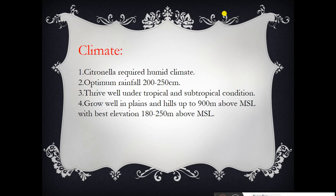Regarding climate, citronella is a tropical and subtropical crop requiring humid climatic conditions. Optimum rainfall is 200 to 250 centimeters. It grows in plains and hills up to 90 meters above mean sea level, with best cultivation at 180 to 250 meters above mean sea level.